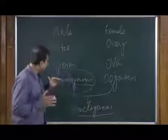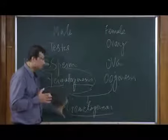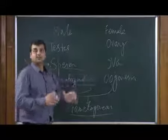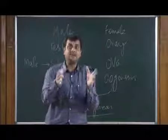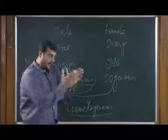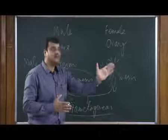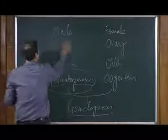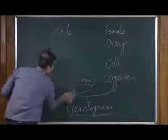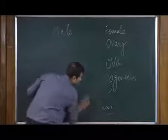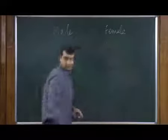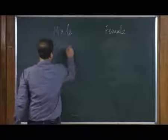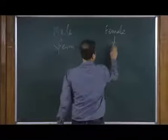The gametogenesis in case of male is called spermatogenesis and in case of female it is called oogenesis — the formation of ova. So this is the first stage: the formation of gametes. The gametes are formed in these two distinct kinds of sexual dimorphism. In male we have sperm and in female we have ova.